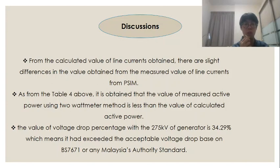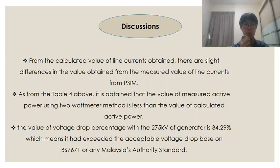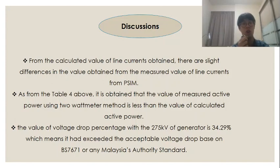Table 4 shows the value of active power absorbed by the loads. There is a slight difference between the calculated active power and the measured active power using the two-watt meter method. The measured active power is less than the calculated active power. Furthermore, the voltage drop percentage with the 275 kW generator is 34.29%, which means it has exceeded the acceptable voltage drop based on BS7671 or any Malaysia authority standard.